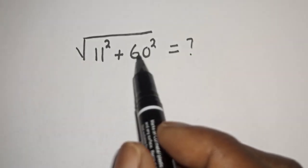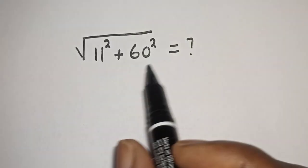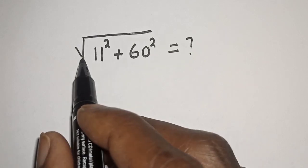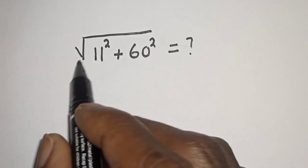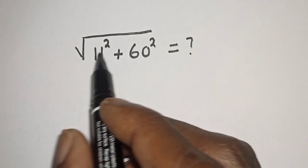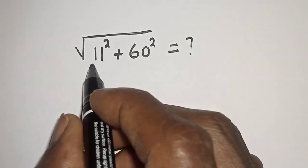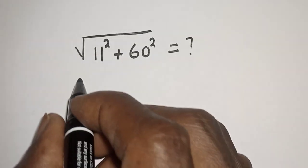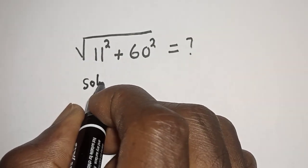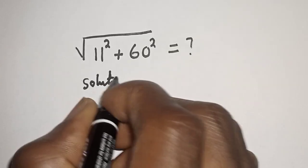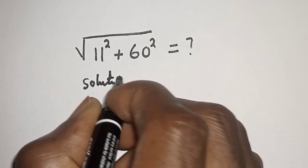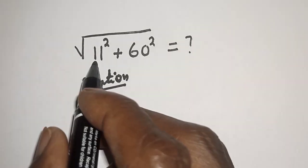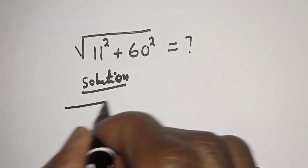Square root of 11 squared plus 60 squared is equal to what? Hi everyone, welcome to my class. In this class we quickly want to evaluate this nice radical problem. But before we proceed, please don't forget to like, share, comment and subscribe. Solution: we have square root of 11 squared plus 60 squared.